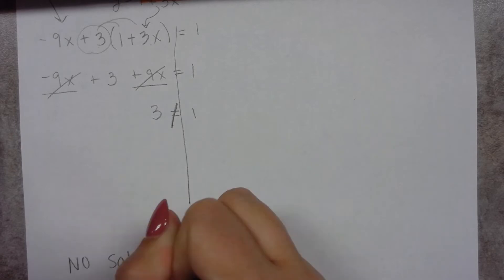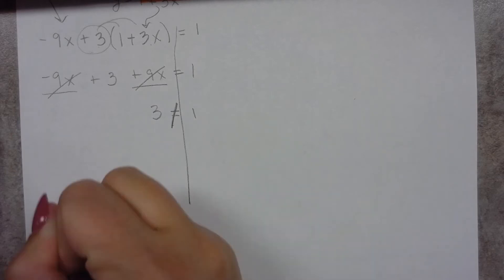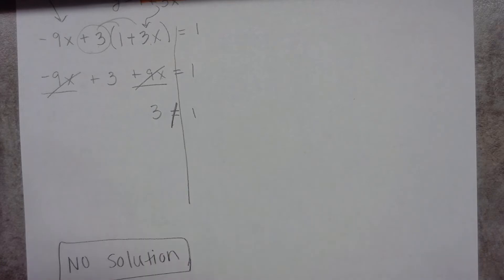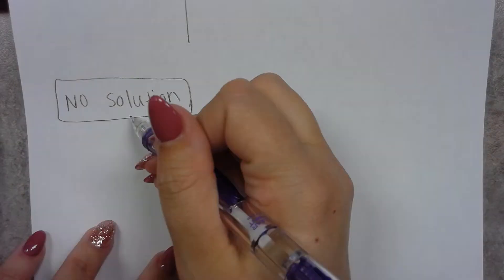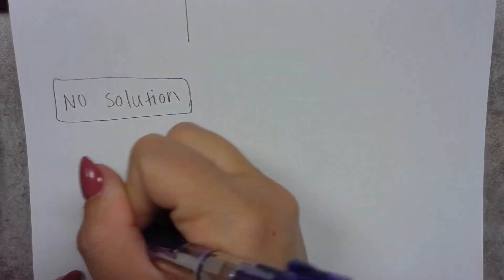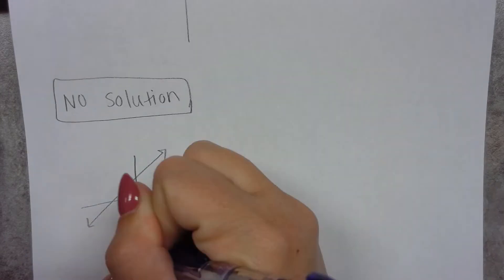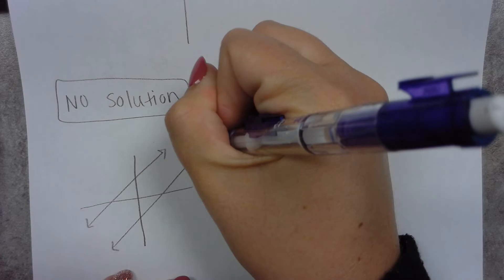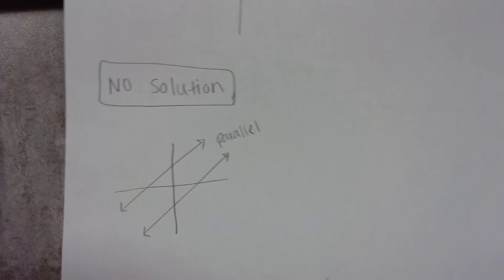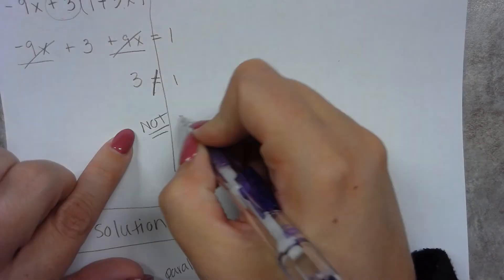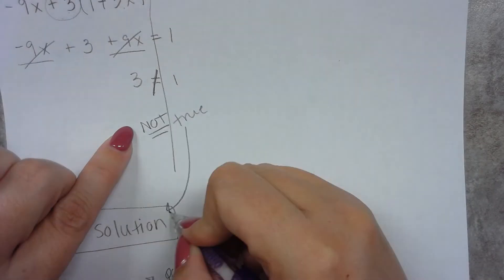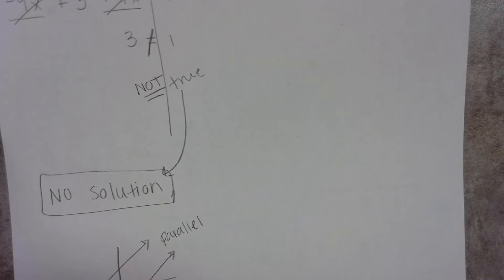Essentially what's happening is that, remember that when we're solving systems, we're looking for where do they cross, where do they connect? So if there's no solution, that means that they never cross, they never connect, which means that they're parallel. Okay, so if this happens, this is a false statement, this is not true, then that means there's no solution. There is no time that these two lines will cross.